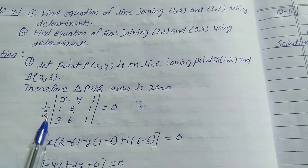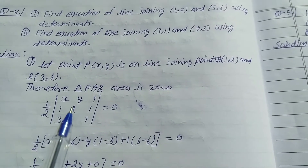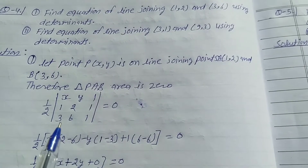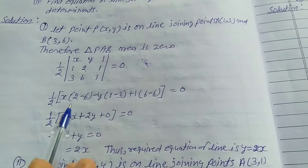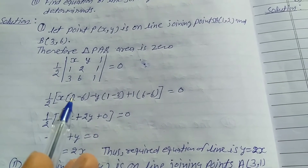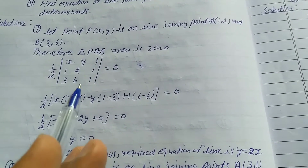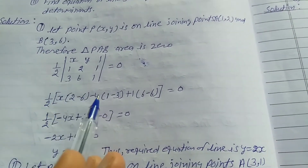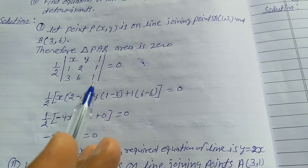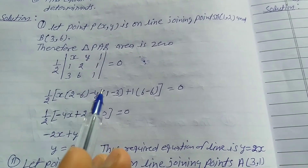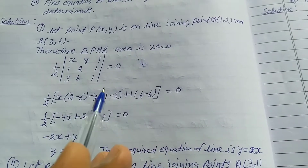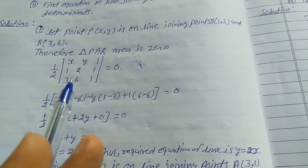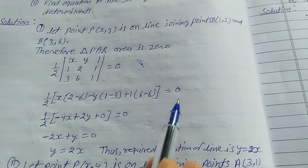So, take 1/2 and use the determinant formula for 3 points for the triangle formula. So: |x, y, 1; 1, 2, 1; 3, 6, 1| = 0. Expanding: x(2·1 − 6·1) − y(1·1 − 3·1) + 1(6·1 − 2·3) = 0, which gives x(2−6) − y(1−3) + (6−6) = 0.